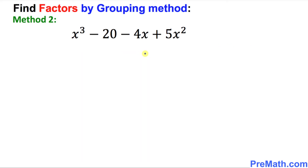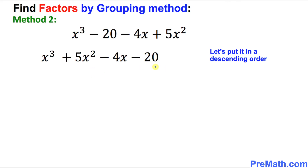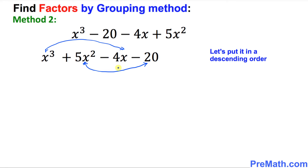Now I am going to show you the second method to factor this given polynomial by grouping. The very first step once again is to put it in descending order, meaning degrees go from highest to lowest. In the second method, if you want to make a different grouping than the previous one, you can group different pairs and still get the same answer.